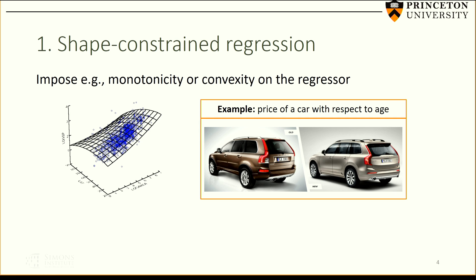This shape constraint can be monotonicity in the features, or convexity, or concavity. The typical applications we have in mind are pricing applications — for example, trying to determine the price of a car. If two cars are identical except for age, an older car should be less expensive than a newer car, so we would have monotonicity in that feature. Other applications include interest rates for student loans.